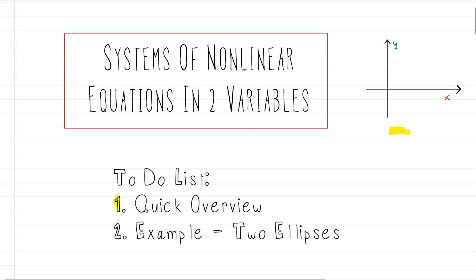The first thing we'll do is a quick overview. We'll talk about systems of linear equations in two variables and in three variables that'll kind of prep us for these nonlinear equations. And then we will do an example of a system where we solve this specific nonlinear system that has two ellipses.